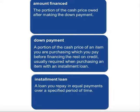The terminology we need to talk about first is the amount financed — that is the portion of the cash price owed after making the down payment. Most, not all, but most installment loans will require some kind of down payment. That's the portion of the loan you're going to pay out of pocket, typically a percentage — maybe 10% or 20% — or whatever extra cash you have to put on that loan at its origination.